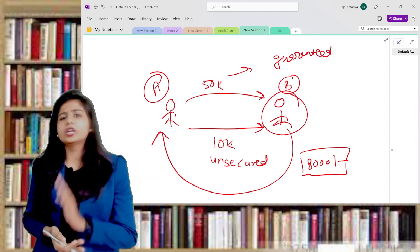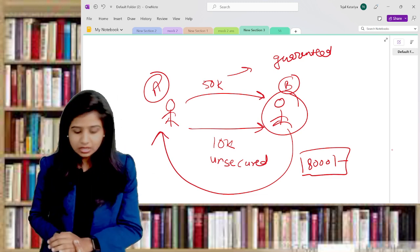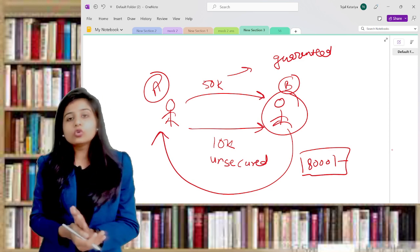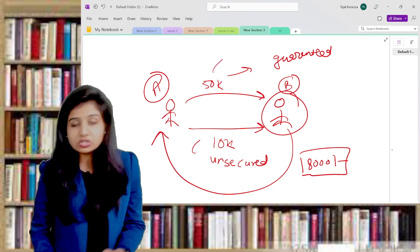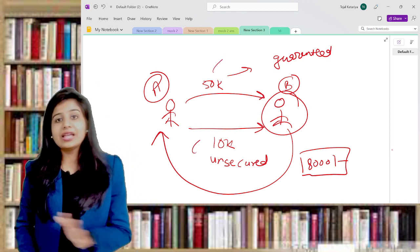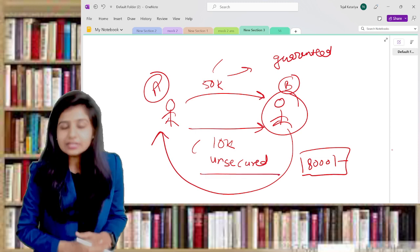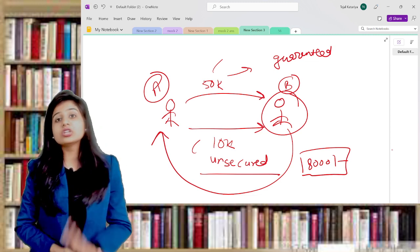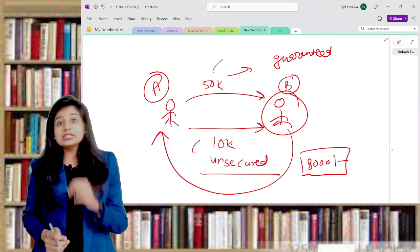B has not said anything on this. Now it's the discretion of A where he wants to apply this 8,000 - either he will apply against 50,000 or 10,000. It's his will, no one can cross question on that. Even though these are unsecured loans, doesn't matter, A can apply this 8,000 against 50,000 and logically he should apply against that also.